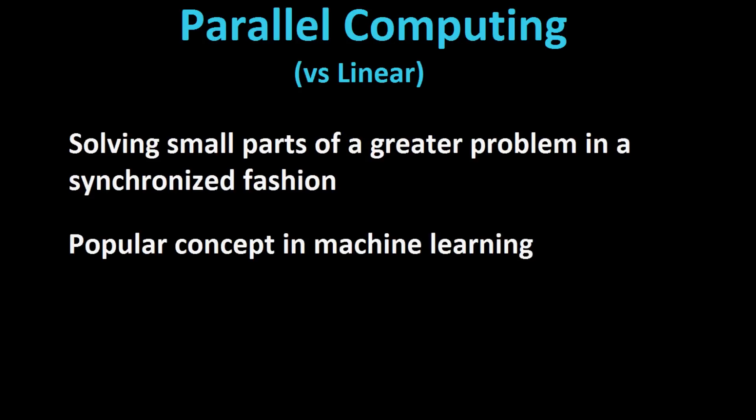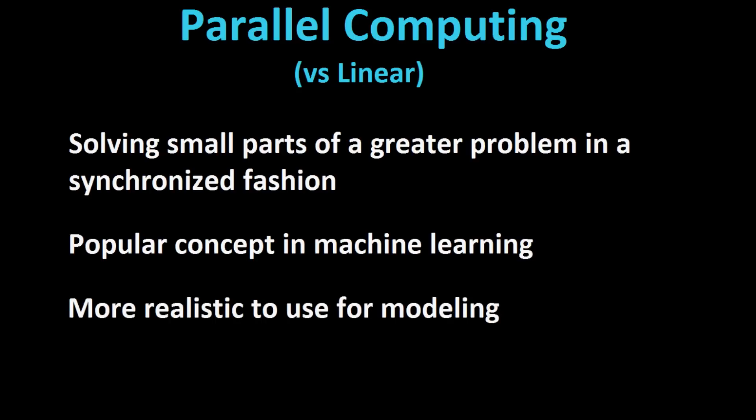Parallel computing has come up in my videos before in the context of machine learning — it's based on the same principles. Breaking down a problem and solving it simultaneously in parts is usually more efficient than solving it linearly. Some calculations can happen at the exact same time when they don't rely on a previous solution. Linear computing is step-by-step, whereas parallel computing has multiple computations happening simultaneously.